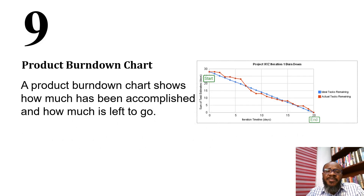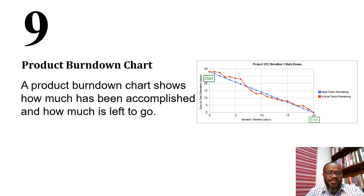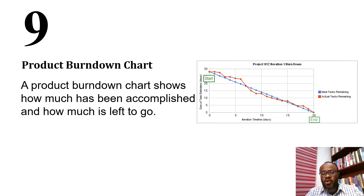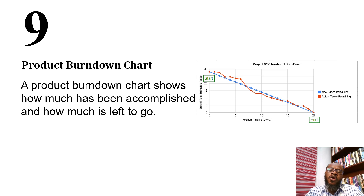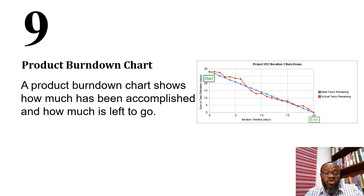A very important chart in agile development is the burndown chart. A burndown chart shows how much work has been accomplished and how much is left to go. It looks at time versus scope, so we know whether we are ahead of schedule, behind schedule, or on track.